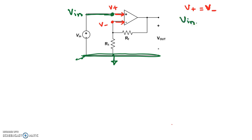So that means V+, this circuit node V+, is equal to Vin. Since V+ is equal to V- because of the ideal op-amp, the V- node is also at voltage Vin. So both the V+ and V- nodes are at the same voltage Vin.